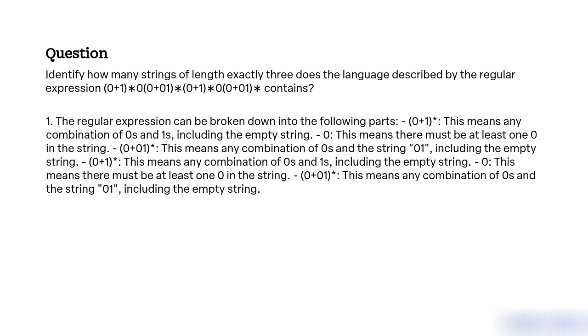Fourth, 0 — this means there must be at least one zero in the string. Fifth, (0+1)* — this means any combination of zeros and ones, including the empty string.